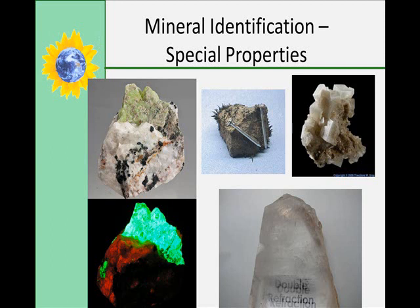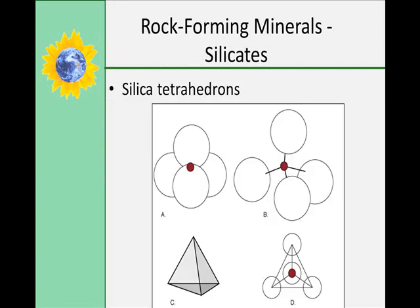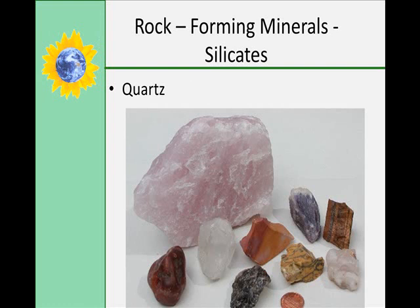Remember, rock-forming minerals form silica tetrahedrons. Silicates are the most important building block for minerals. The silica tetrahedron, to remind you, is four oxygen atoms bonded to one silicon atom. Some of the rock-forming minerals that are silicates include quartz. Quartz is all silica tetrahedrons with nothing else — its chemical formula is SiO2, because the oxygen atoms get shared with neighboring silicon atoms.